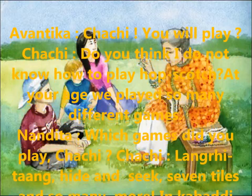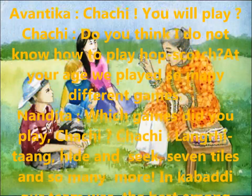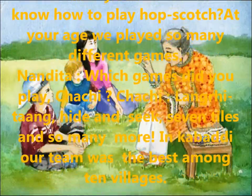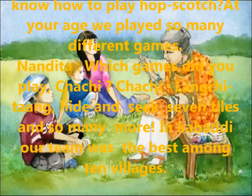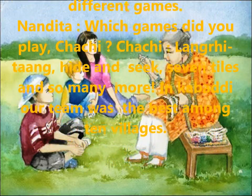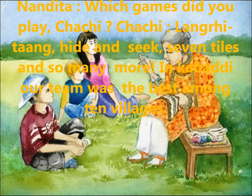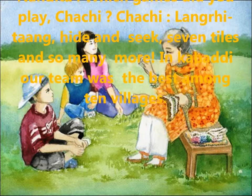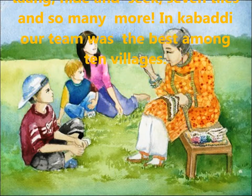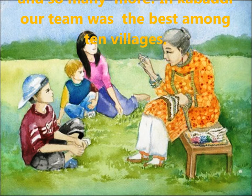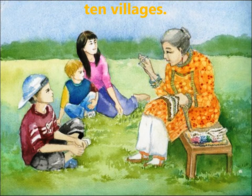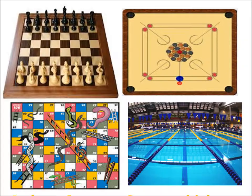Then Nandita asked Chachi, which games did you play, Chachi? Chachi said that we played hide and seek, seven tiles, and so many more. In Kabaddi, our team was the best among ten villages. Avantika asked Chachi to tell them more games. Chachi said, let us see the games we play. We play two types of games: indoor and outdoor games.